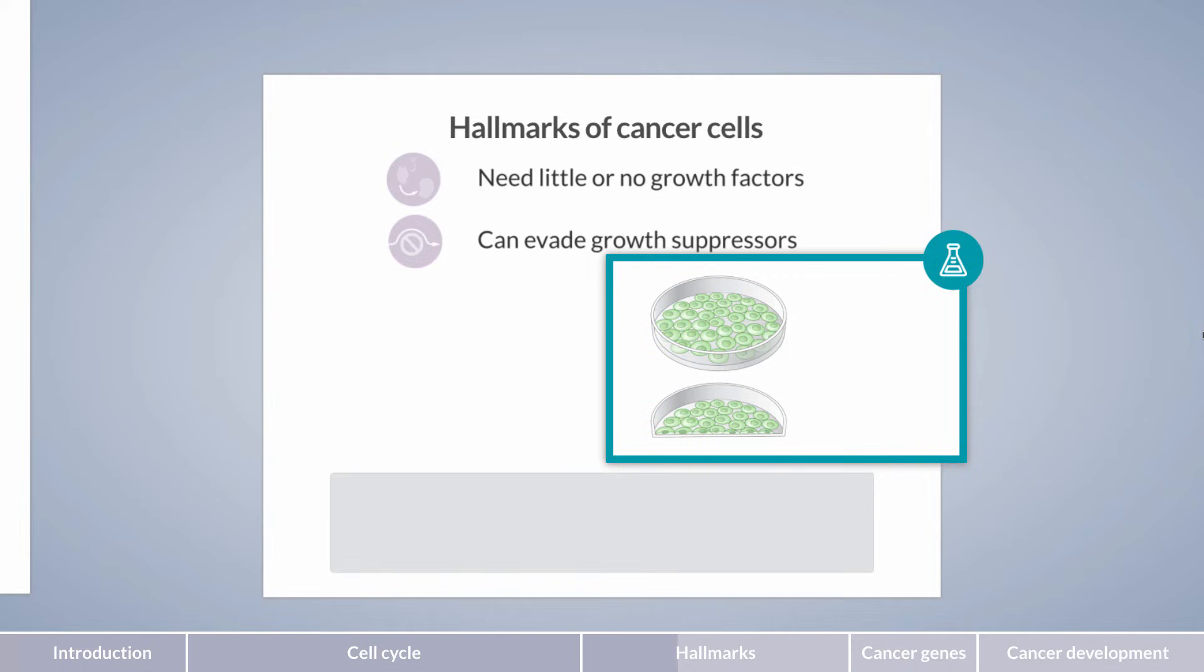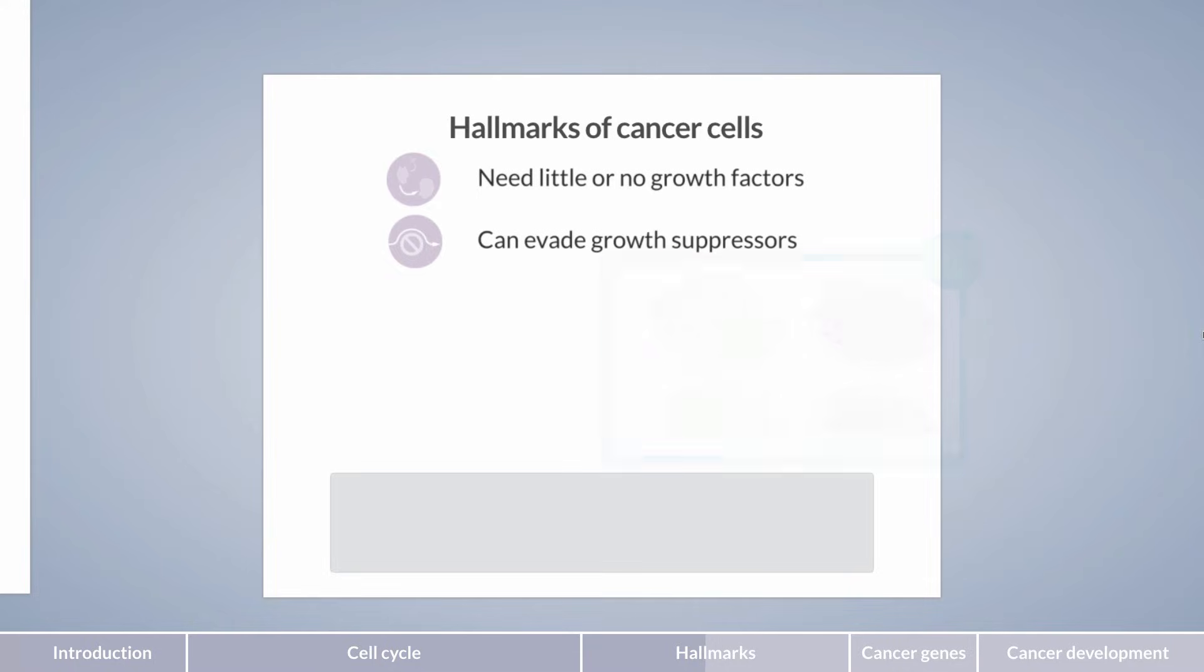In contrast, contact inhibition is lost in cancer cells and results in uncontrolled cell growth and proliferation, producing a multi-layer of cells. Another example of growth suppressors are the cell cycle checkpoints, whose function is usually impaired in cancer cells and leads to unchecked growth.